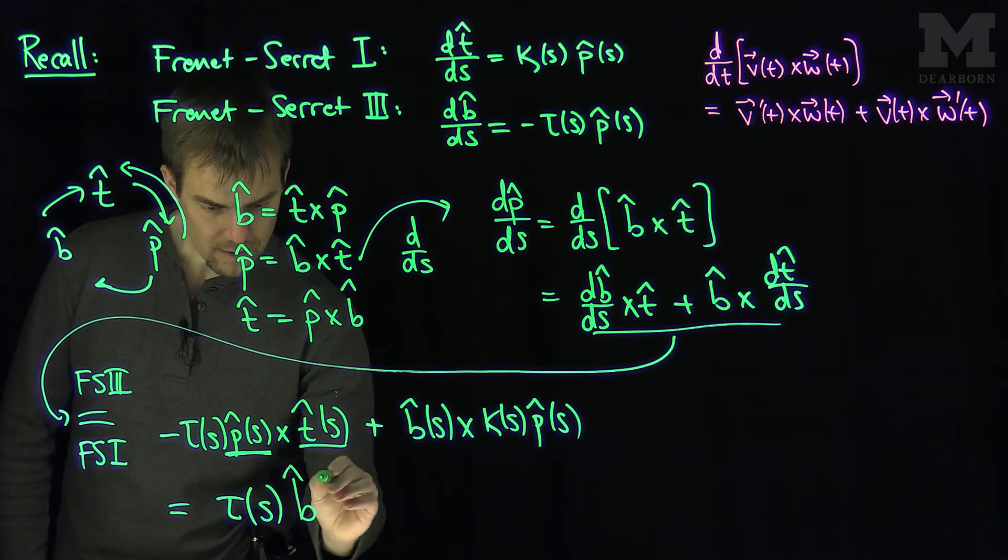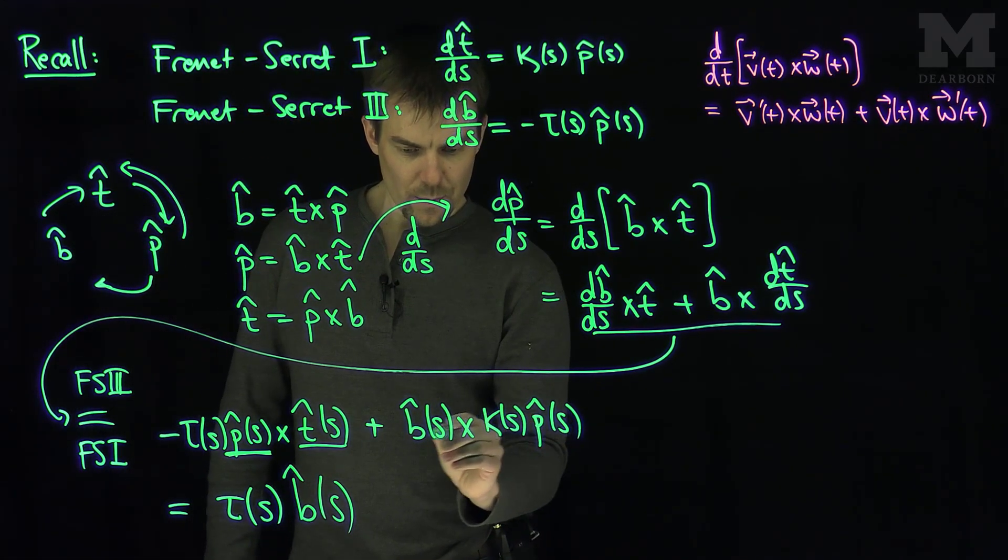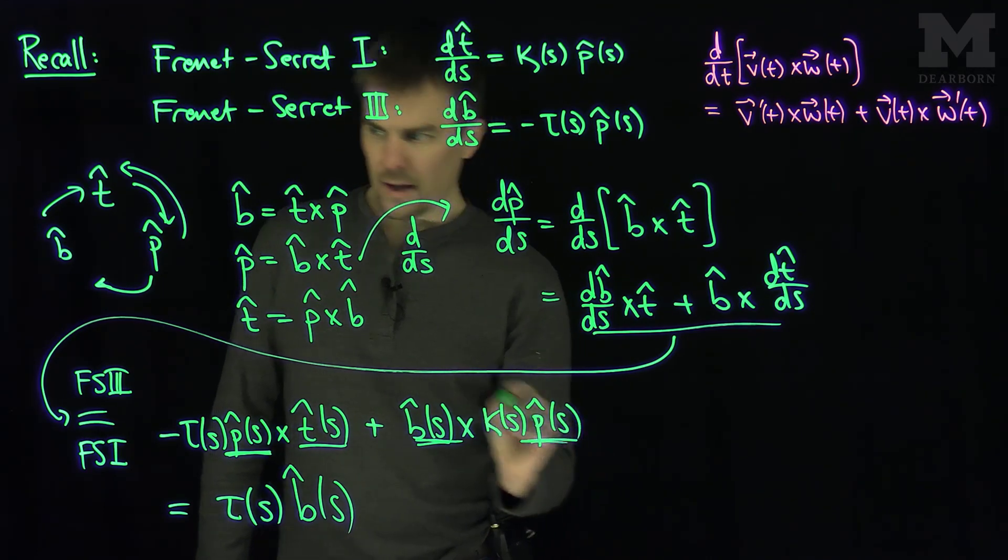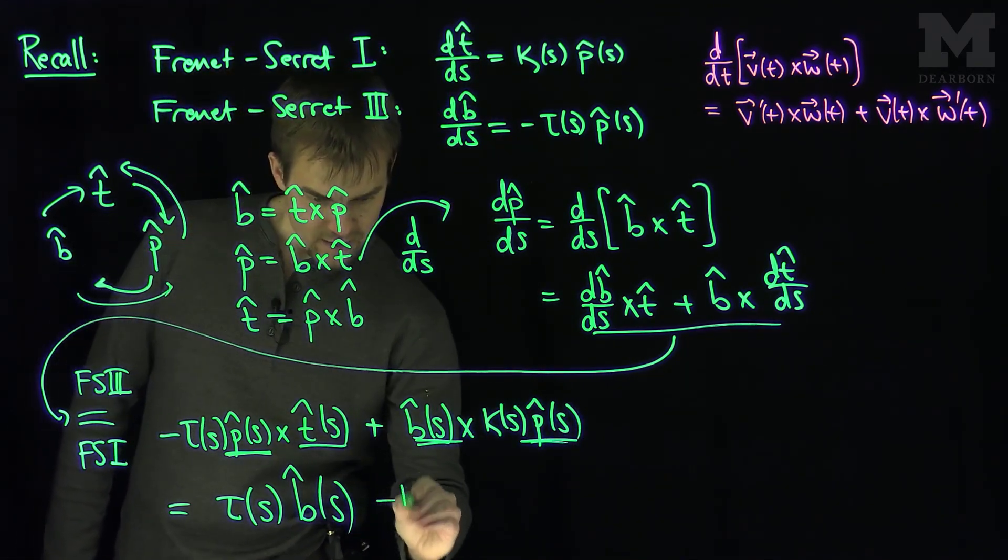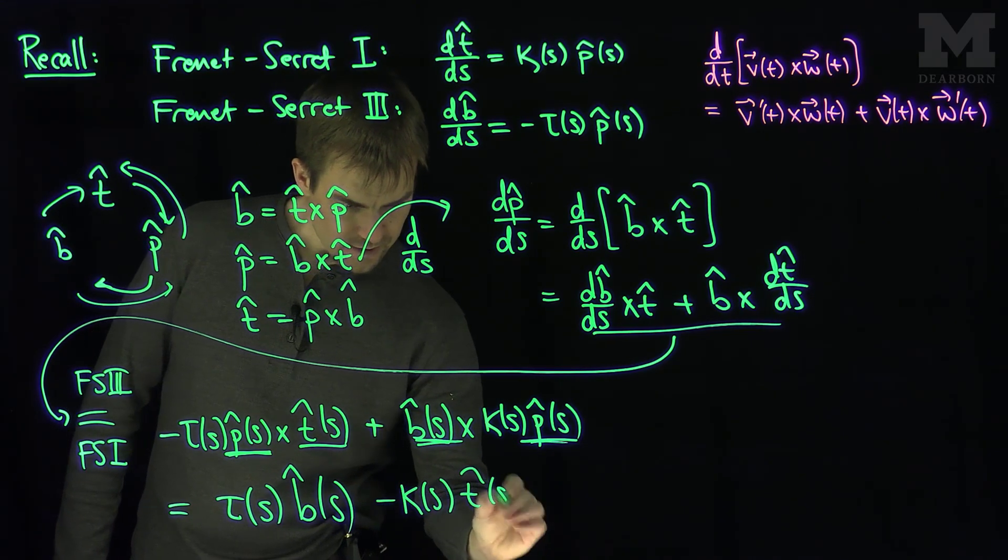And then we have a b hat of s. And now, we have b cross p. b cross p, it goes this way, so that's negative t. So then we have negative curvature of s times t hat of s.